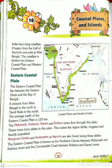India has a long coastline. Coastline means the edge or shape of coast. You can see in the map there is a green area — that is called the coastline. It begins from the Gulf of Kutch and ends at West Bengal. The Gulf of Kutch is an inlet of the Arabian Sea along the west coast of India in the state of Gujarat, renowned for extreme daily tides.